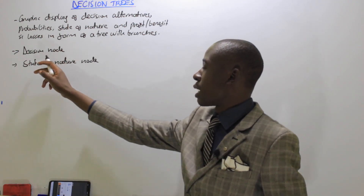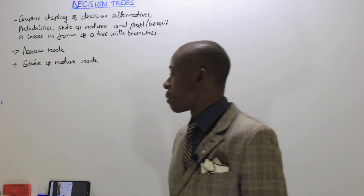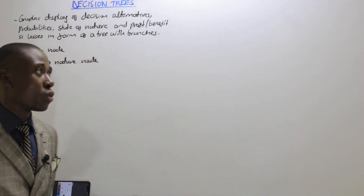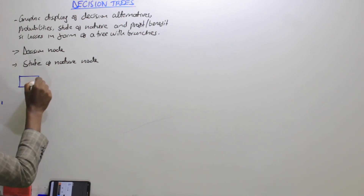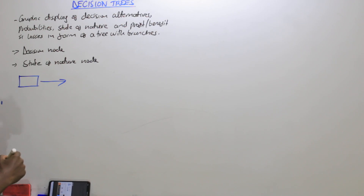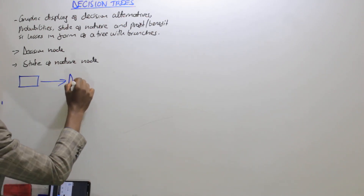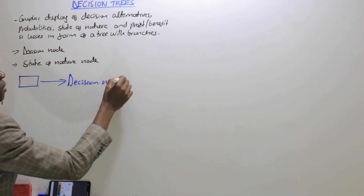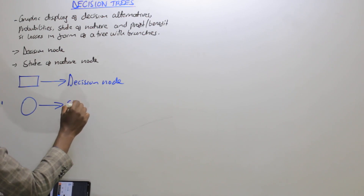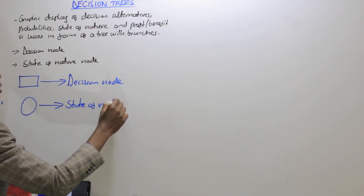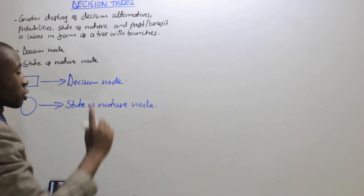Every decision tree must contain a decision node and a state of nature node. These nodes are represented differently. A decision node will always be represented by a square symbol. That is our decision node. Whereas a state of nature node will always be represented with a circle. So we'll be talking about these two nodes.